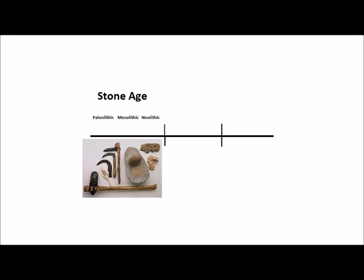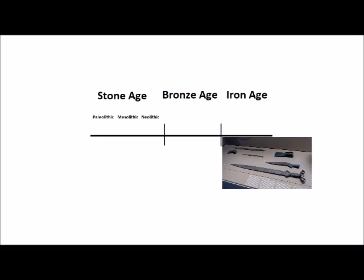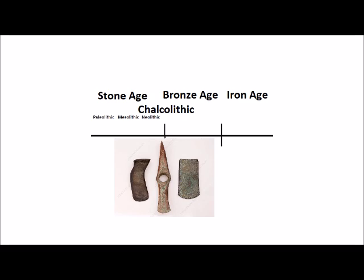Next comes the Bronze Age, characterized by the widespread use of bronze tools and weapons. Then finally we have the Iron Age, characterized by the widespread use of iron tools and weapons. And sometimes we have the Chalcolithic as a transition period between the Stone and Bronze Age, during which copper tools saw widespread use.